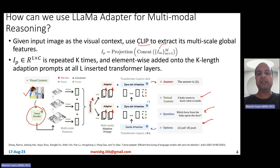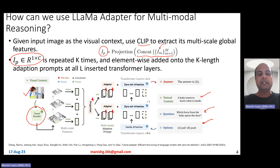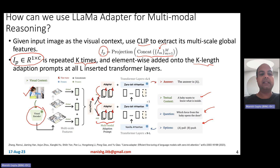You get M different features of different sizes, concatenate all of those features, and then project them to a single vector of size C, which equals the embedding dimension of the LLaMA model. You then repeat this K times so that it forms K prompts per layer, repeated across various layers in the transformer model. This image projection (IP) vector is repeated K times to form K different vectors prepended at each layer, elementwise added as K-length adaptation prompts in all L inserted transformer layers.